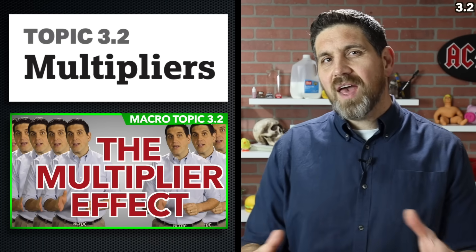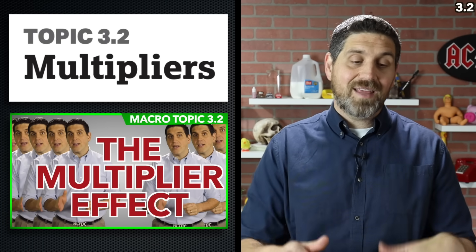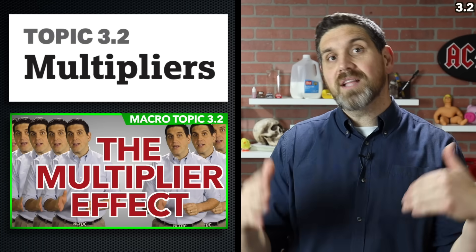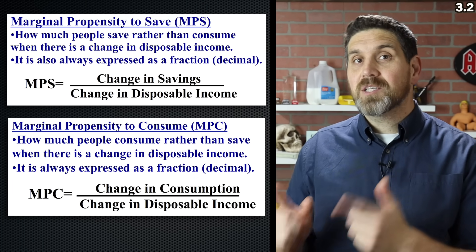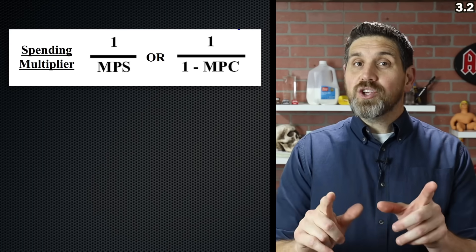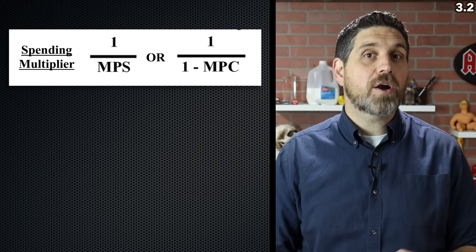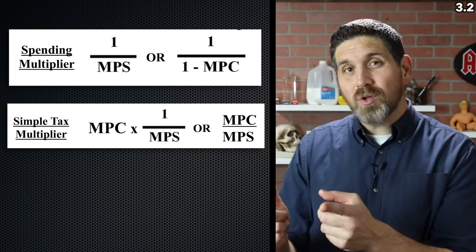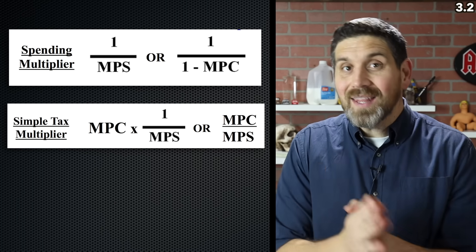Let's talk about the multipliers — this is the only math-heavy part in this unit. The multiplier effect is the idea that an initial change in spending causes a bigger change in spending in the economy. That's because one person's spending becomes somebody else's income, and that person saves a portion and spends the rest. The rest they spend becomes somebody else's income, they save some and spend the rest — multiplier effect. The key is knowing how much people save and spend of new income. How much they save is the marginal propensity to save; how much they spend is the marginal propensity to consume. The equation for the simple spending multiplier is one over the marginal propensity to save. In addition, there's the tax multiplier, which is one less than the spending multiplier.